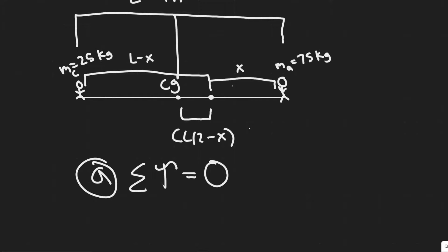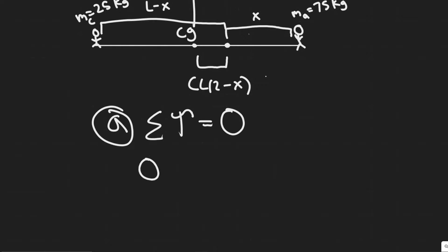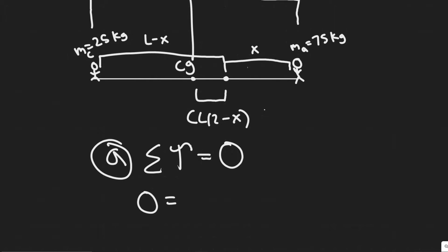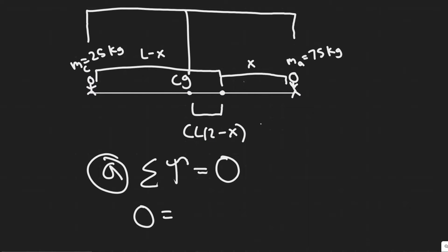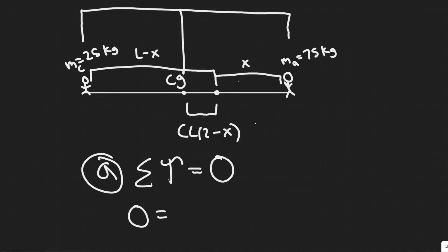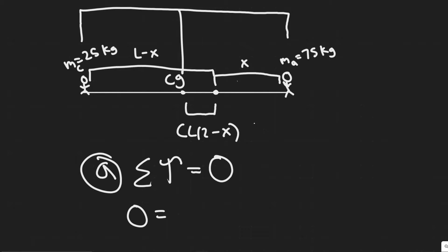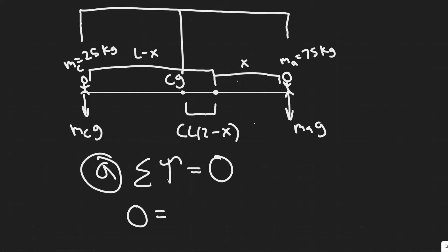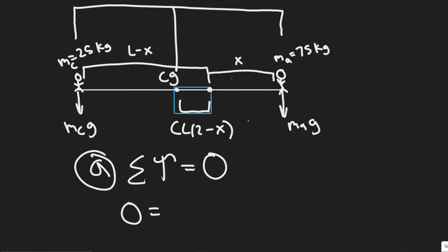If the sum of torques were not zero, the board would rotate. In part A, there are only two forces acting: the force due to gravity of the adult, M_A times G, and the force due to gravity of the child, M_C times G. We can ignore the mass of the board for part A since they tell us to, so we only look at these two torques.